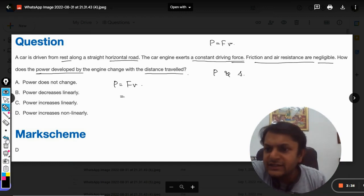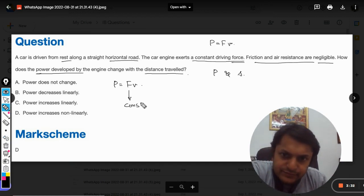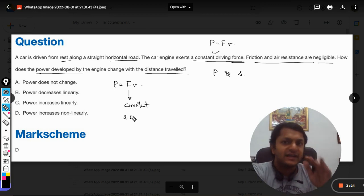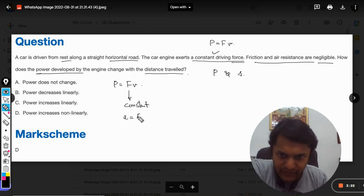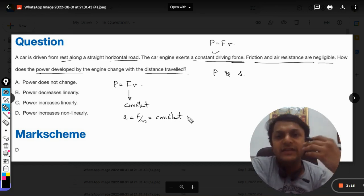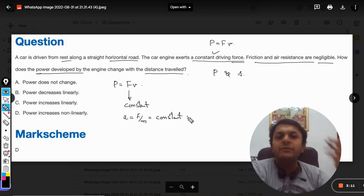This force is constant as given in the question, so it would be moving at a constant acceleration and that acceleration will be F by m, a = F/m. Importantly, the acceleration will be constant.